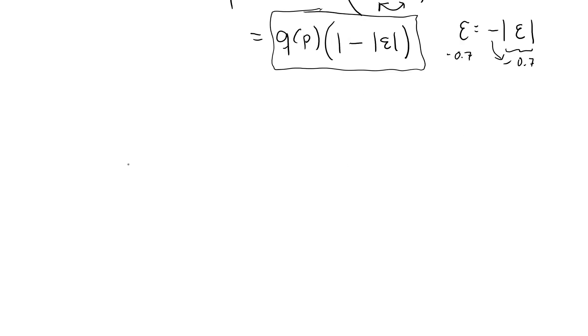We can also look at the revenue as a function of Q. R of Q, and this would be P of Q times Q, where P of Q is the inverse demand function. In this case, R prime of Q is the derivative of this, P prime of Q times this unaltered, plus P of Q.